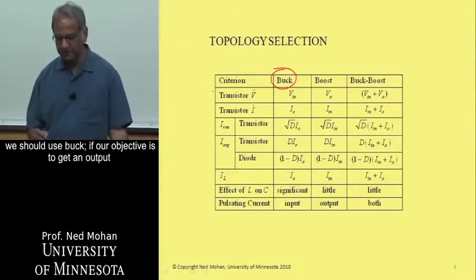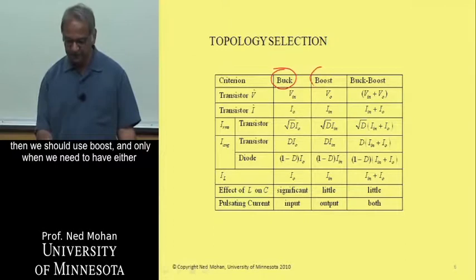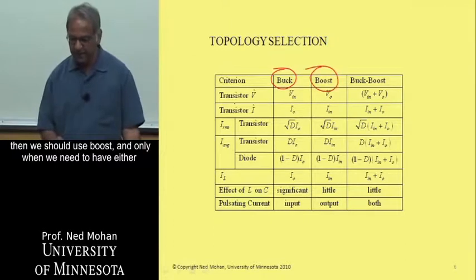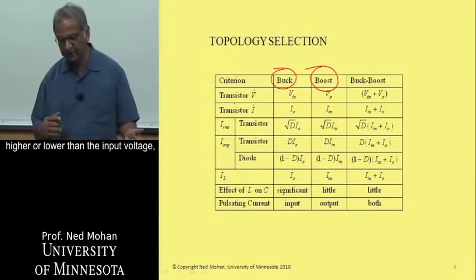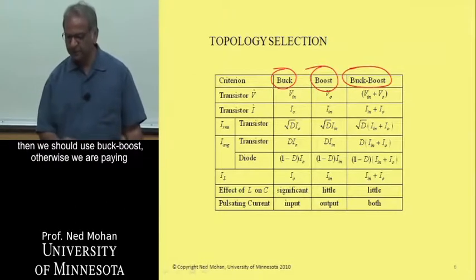If our objective is to get an output voltage which is always greater than the input, then we should use boost. And only when we need to have either higher or lower than the input voltage, then we should use buck boost. Otherwise, we are paying unnecessary penalties as this table here would show.